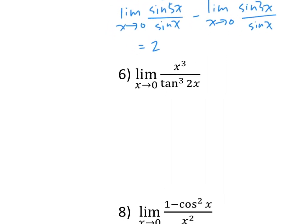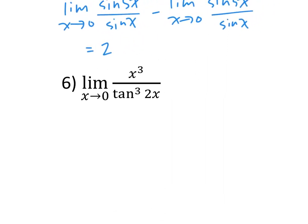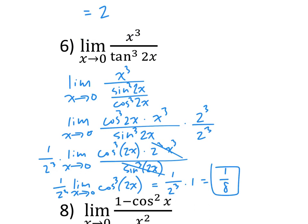For number 6, there is a tangent cubed. Apply what we talked about with tangent. If you have sine cubed 2x, you need three sine 2x's, which means you need 2x cubed in the denominator. You multiply top and bottom by 2 cubed, which lets you cancel. The leftover part is not undefined at x = 0, so plug in and you get 1 over 8.